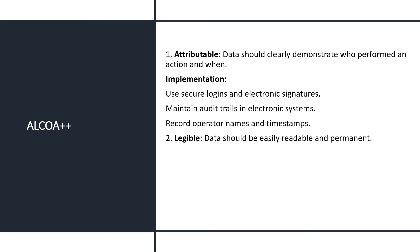The second letter, L, stands for Legible. Legible means data should be easily readable and permanent. There should not be any ambiguity in reading the entries — they should be very clearly written.